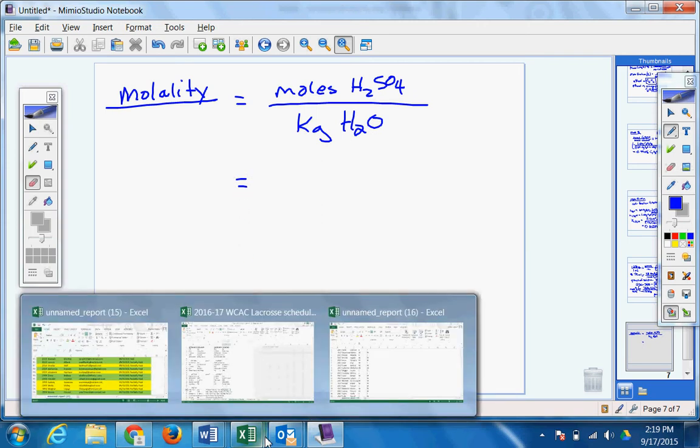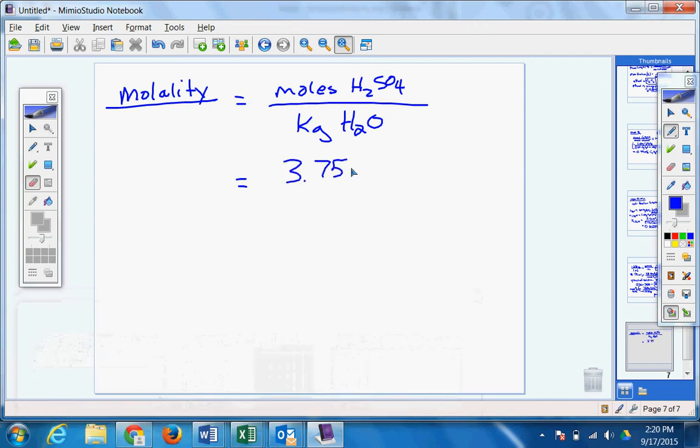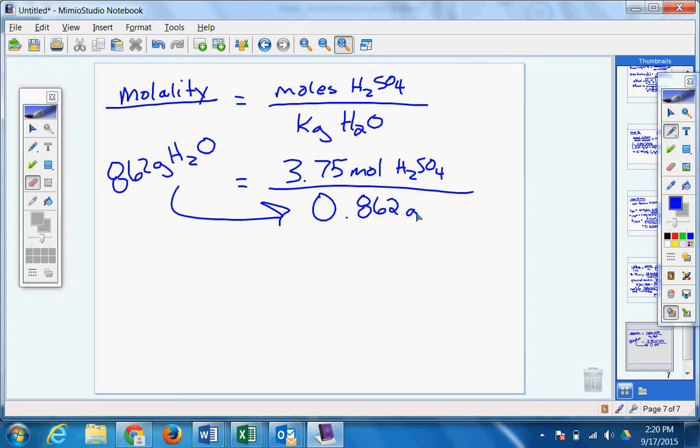So we're going to take the moles over kilogram H2O. You'll make me an eraser. There you go. Good job. So molality. What are the moles? What moles do we have? Did we already solve for moles somewhere? Yes. Did we? No. I don't know. You tell me. In the problem. We already found out that there's 862 grams of water. We need to make that into kilograms. We should be able to do that quickly. And what do we get? 0.862.